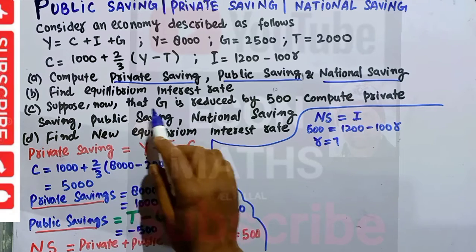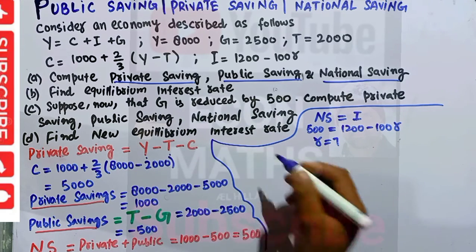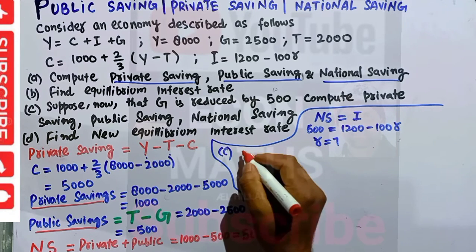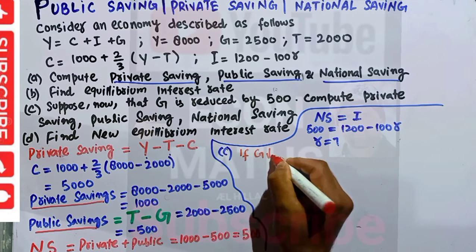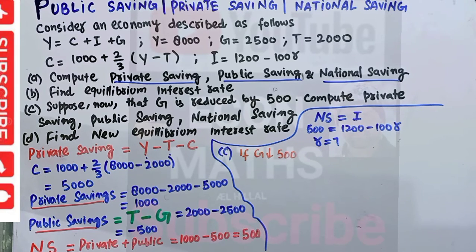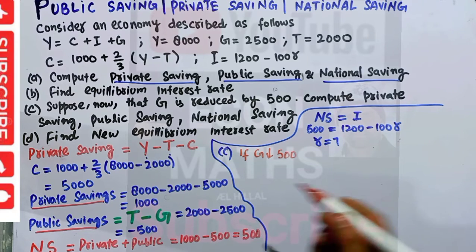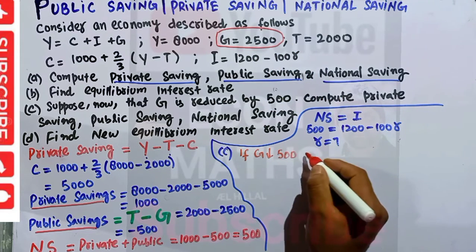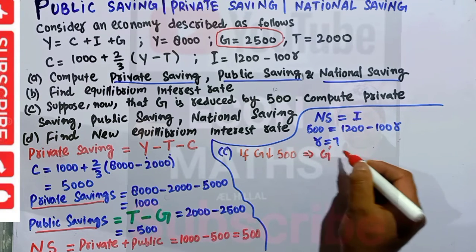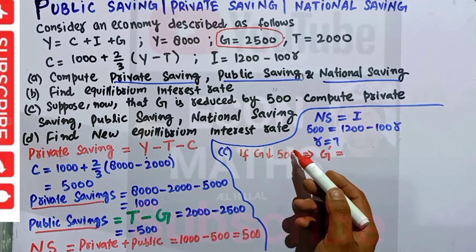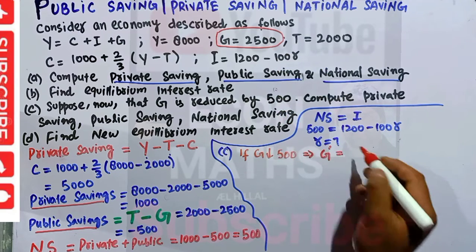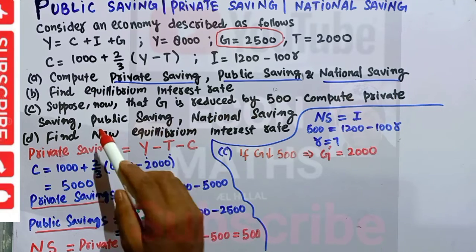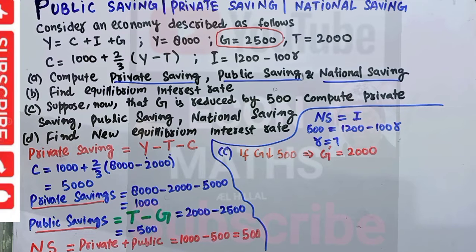Now suppose government expenditure is reduced by 500. Originally government expenditure was 2500; reducing it by 500 gives a new government expenditure G prime equals 2500 minus 500 equals 2000. We need to compute the new private savings, public savings, and national savings.